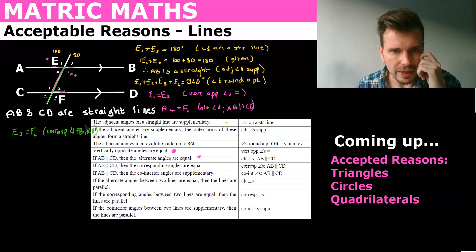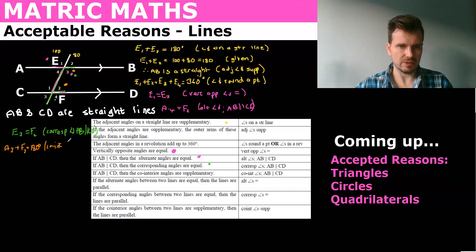Okay and then co-interior angles are supplementary so we'll just do that perhaps in orange and so that would be you could say that's the U. Okay and so we would say E3 plus F2 equals 180 degrees and that's co-interior so you very short again co-interior angles AB parallel to CD.